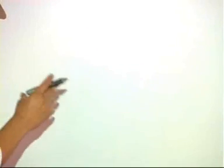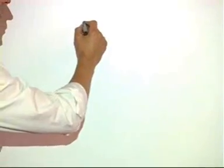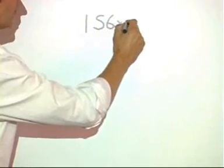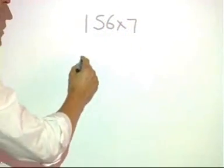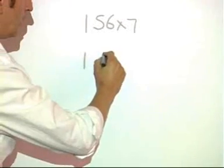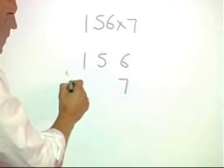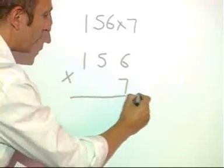As an alternative to the grid method, many schools, when they're introducing the standard method, use an interim system or expanded method. So, if we go back to the question we looked at earlier, 156 times 7. We can set this out in the usual way, using place value columns, and many of you will be familiar with this system.